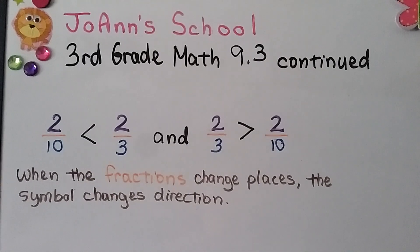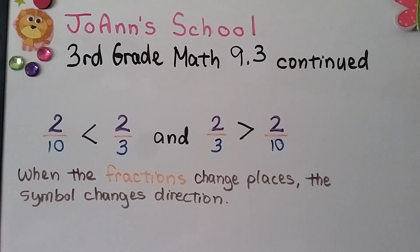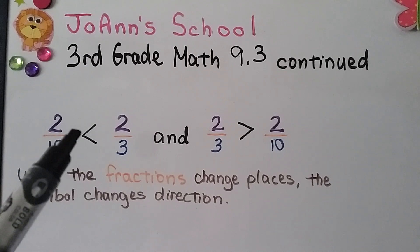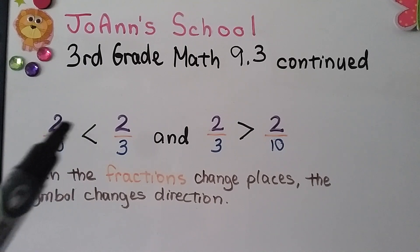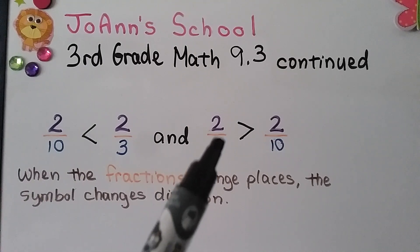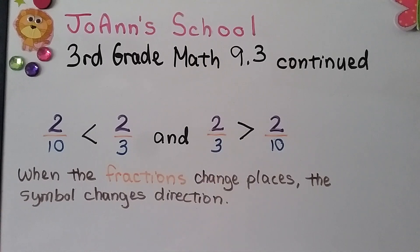Two-thirds is greater than two-tenths. We read it in the order of which fraction is on the left. Two-tenths is less than two-thirds, and two-thirds is greater than two-tenths.